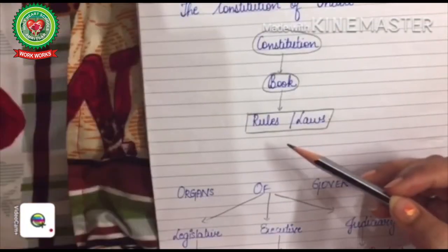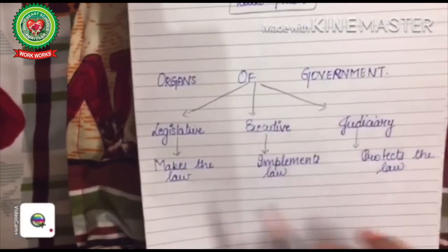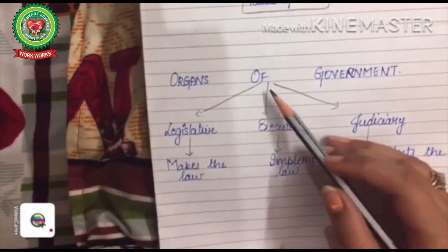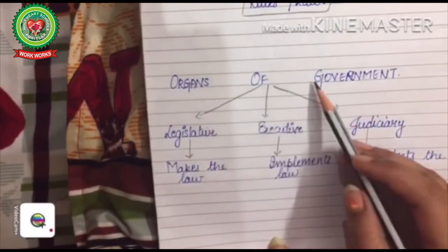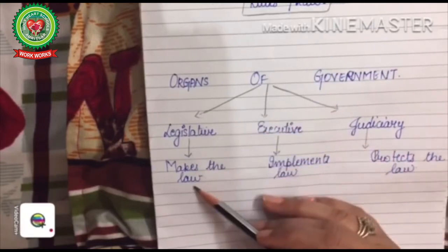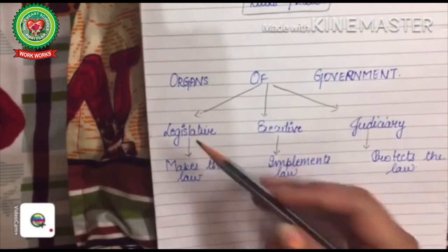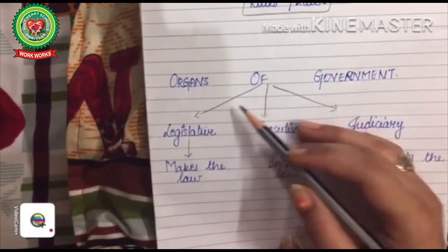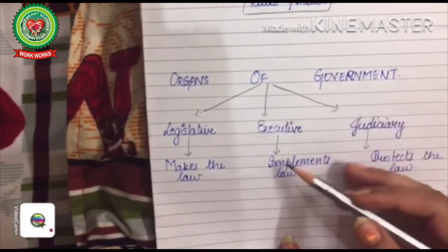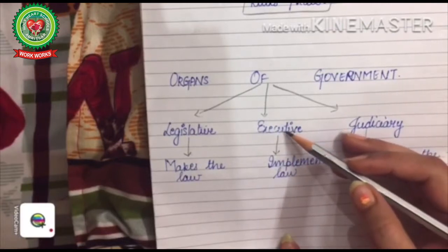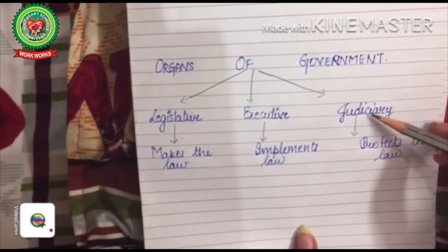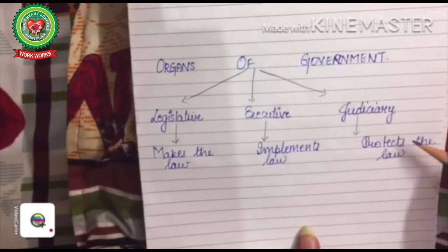There are three organs of the government. Number one: Legislative — the organ of the government which makes the law. Number two: Executive — the organ of the government which helps in the implementation of the laws, i.e., executes them. Number three: Judiciary — the organ of the government which protects the law.